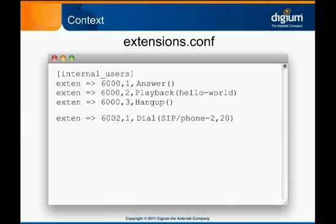We'll start by taking a closer look at the extension we set up in the last module. Just as we did before with our Hello World extension, we added the extension we created to ring our phone into the internal_users context in extensions.conf. Remember that this is the context we configured for each phone. This is the location in the dial plan where Asterisk will look for an extension dialed by the phone.